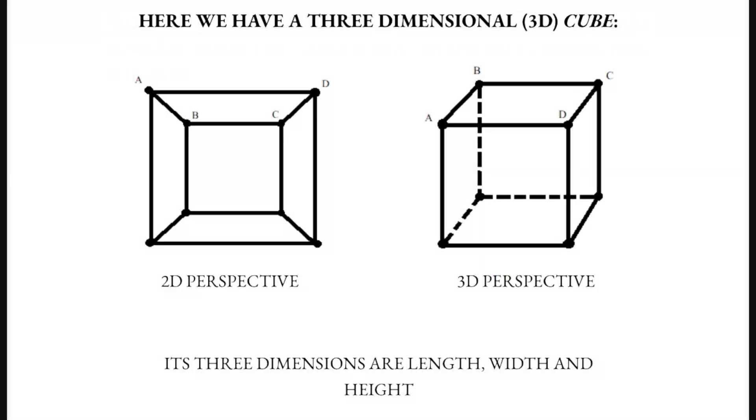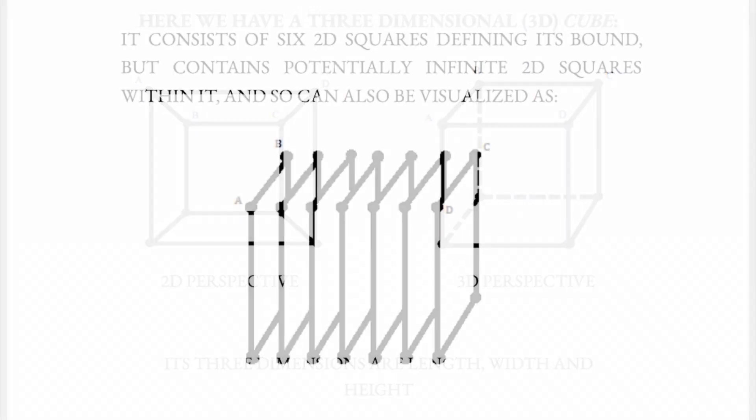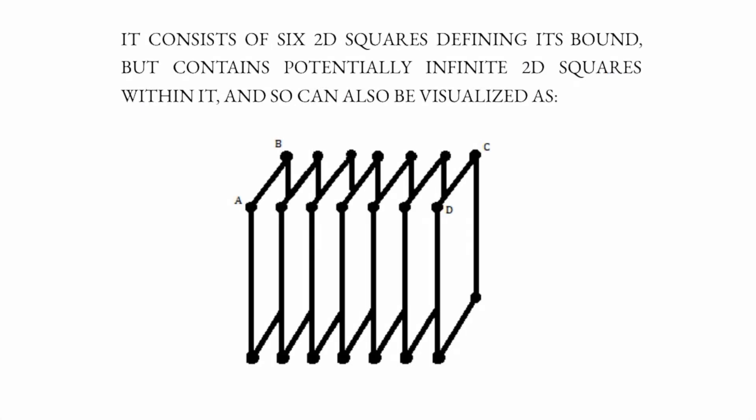Here we have a three dimensional cube. Its three dimensions are length, width and height. It consists of six two dimensional squares defining its bound, but contains potentially infinite two dimensional squares within it, and so can also be visualised as such.